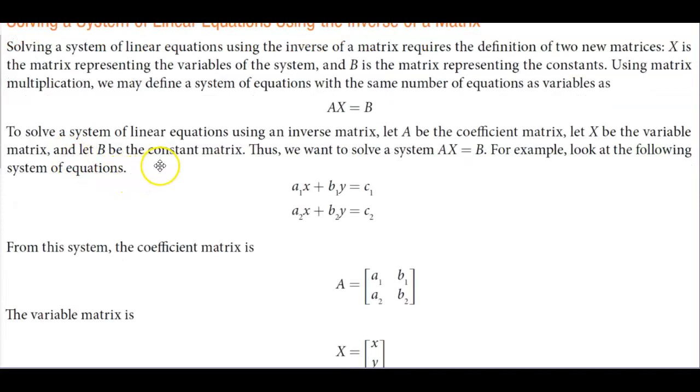To solve a system of linear equations using an inverse matrix, we're going to let A be the coefficient matrix. We're going to let X be the variable matrix, and we're going to let B be the constant matrix. Thus, we want to solve a system AX equals B.